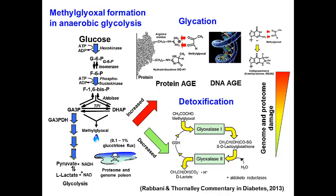On proteins, it is directed mainly to arginine modifications, producing a hydroimidazolone called MGH1. On DNA, it modifies deoxyguanosine bases to produce an imidazopurinone. Both of these types of adducts are quantitatively the most important type of damage to protein and DNA respectively in healthy humans.